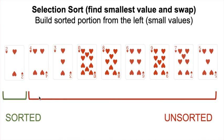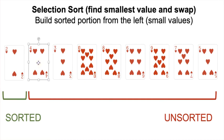Now our problem is a little bit smaller. For our second iteration, we do the same thing starting with the first element in the unsorted portion, which is now just a little bit smaller. 4 is the first element in our unsorted portion — we assume it's the smallest and walk through to find a smaller value.